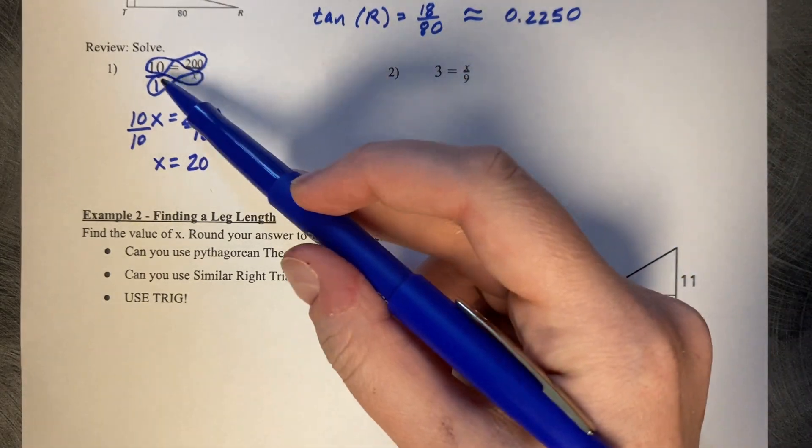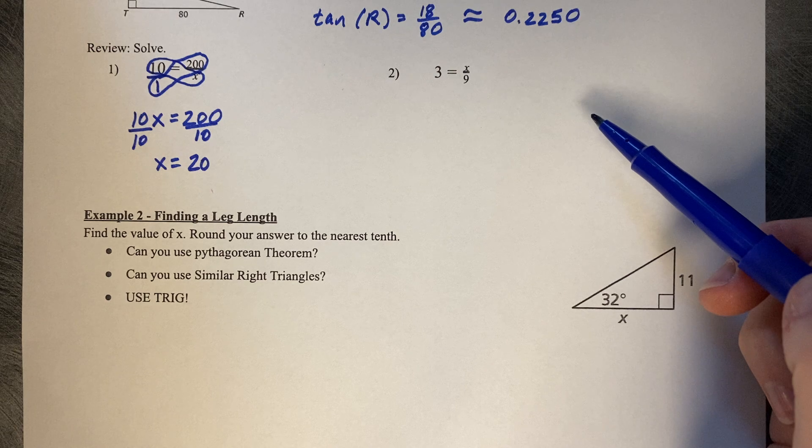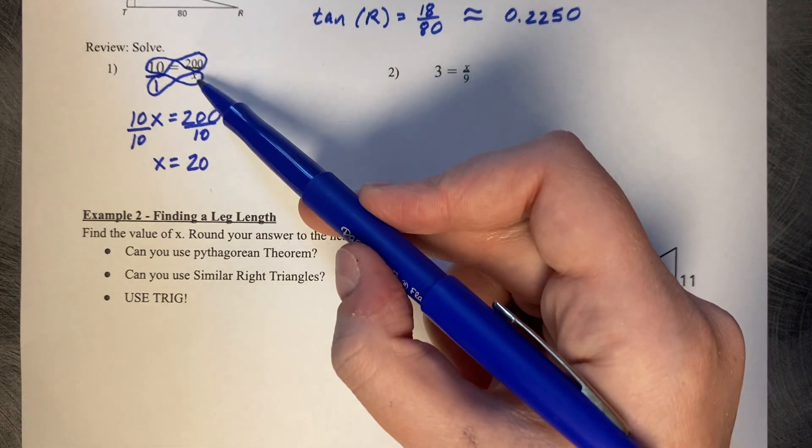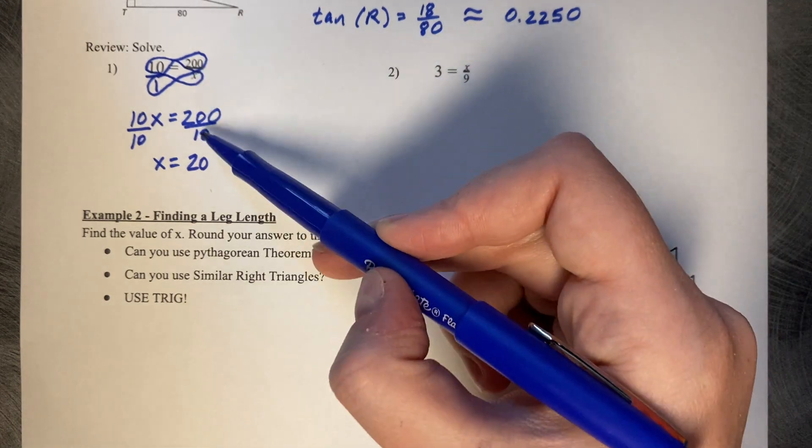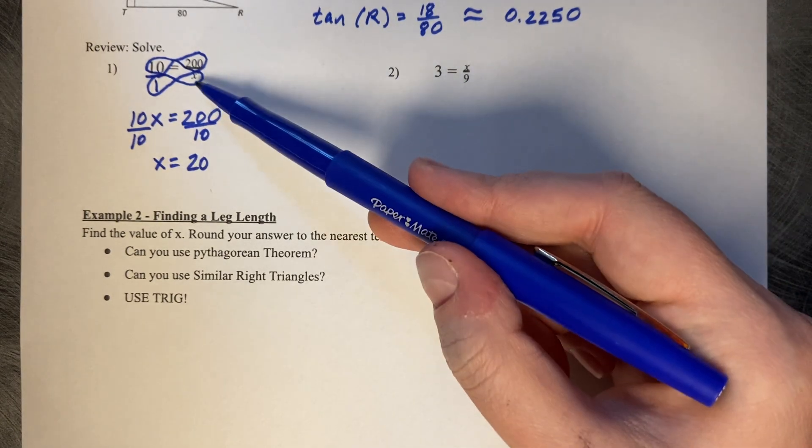So the process here is to write your value over 1 and then cross-multiply. If x is in your denominator, you're going to end up doing division.